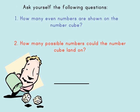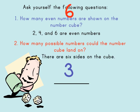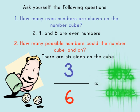Let's begin by asking a few questions. First, how many even numbers are shown on the number cube? Well, 2, 4, and 6 are even numbers, so 3 even numbers are shown on the number cube. Second, how many possible numbers could the number cube land on? Well, there are 6 sides on the cube, so there are 6 possible numbers the number cube could land on. This means the probability of the number cube landing on an even number is 3 out of 6, or a 50% chance.